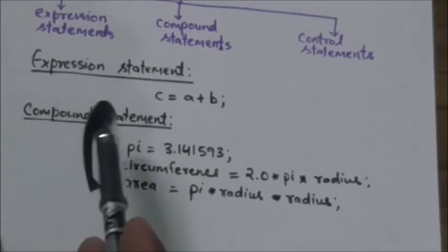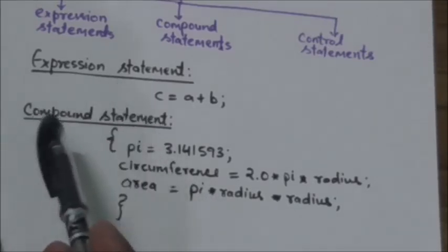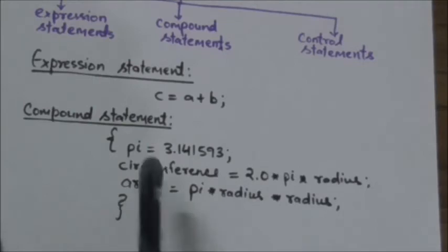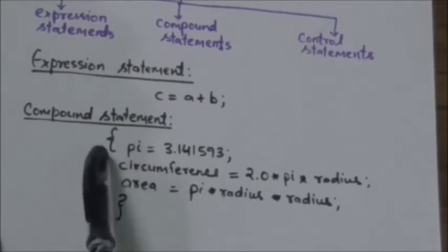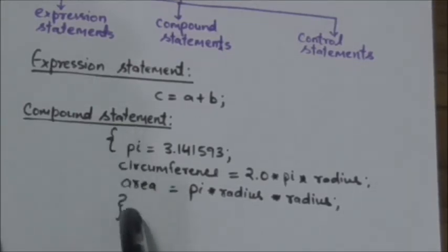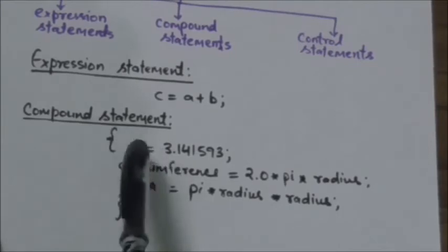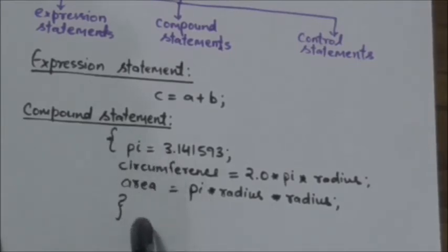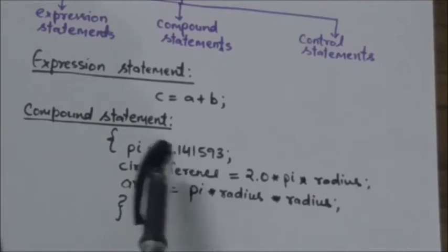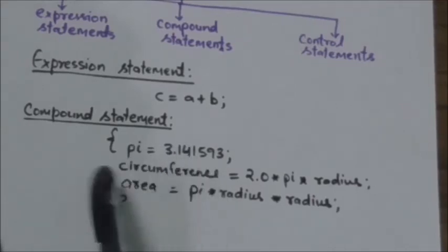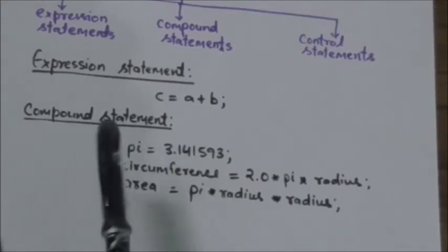Now compound statement. So the compound statement consists of several individual statements enclosed within a pair of these curly braces. Here you can see that it is a compound statement. So the individual statements within a compound statement may themselves be expression statements, compound statements, or control statements.